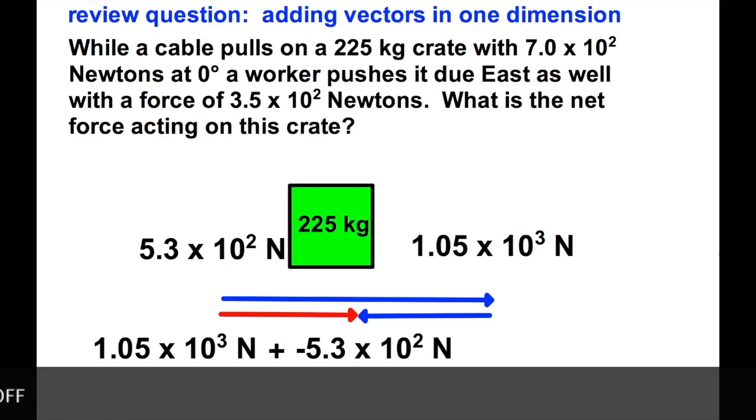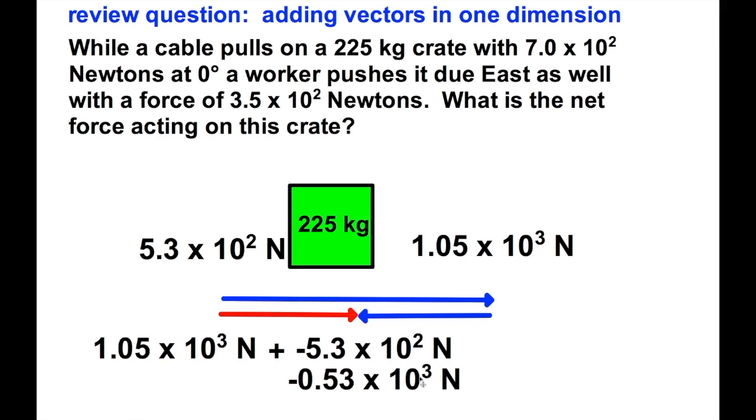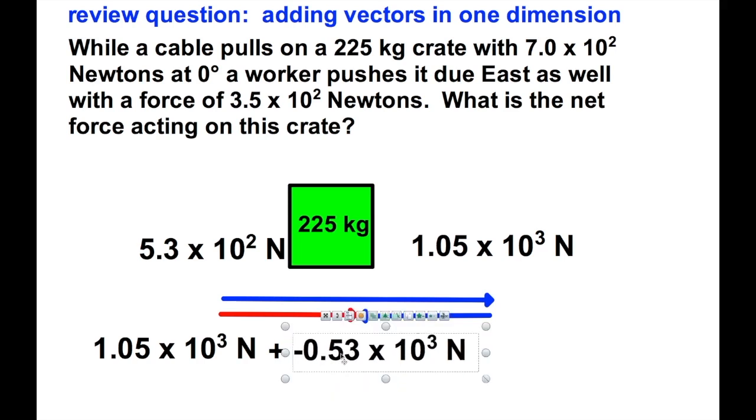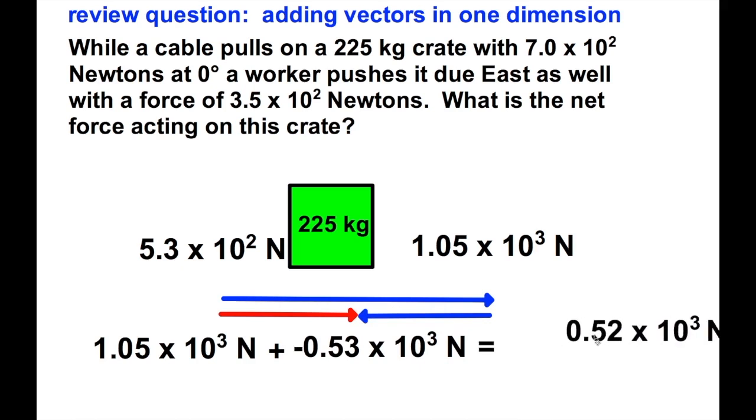So you could just as easily say we're taking 1.05 times 10 to the third Newtons and subtracting 5.3 times 10 to the second Newtons. I can take this and divide it by 10 in order to make my power of 10 ten times higher. That way the exponents match. They're both times 10 to the third. Once I add those together, I get my answer: 0.52 times 10 to the third Newtons. That would still be, as we can see with the red vector, in the zero degree direction, still due east. But to put it in proper scientific notation, since I have to have 5.2, make that 10 times more. I make my exponent 10 times less. And so that would be my final answer.